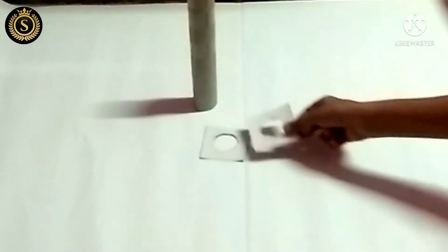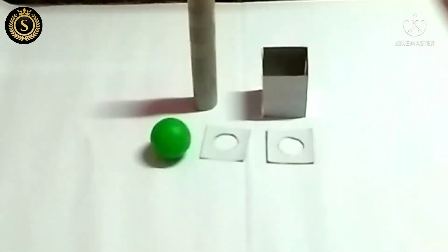Take a cardboard roll. Take two pieces of cardboard and draw a circle and cut it. And take a box and take a ball.